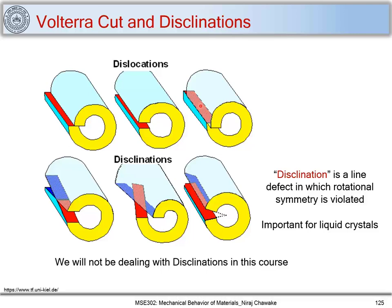We have been introduced to dislocations like edge dislocation and screw dislocations. We have seen this case of dislocations where we used a Volterra cut using a Volterra knife. Initially this cylinder was perfect and we had a dislocation line as an axis of this cylinder, called t. If I make a cut on this plane and move along this direction, the Burgers vector is perpendicular to the dislocation line — this becomes a case of edge dislocation.